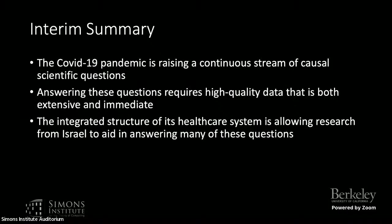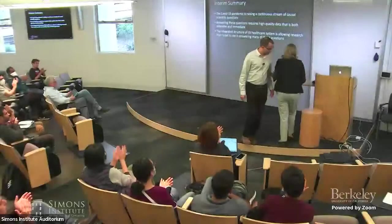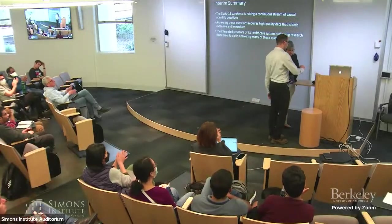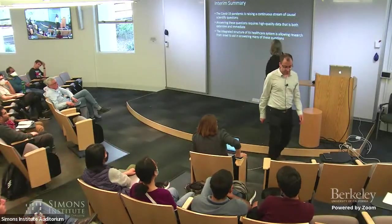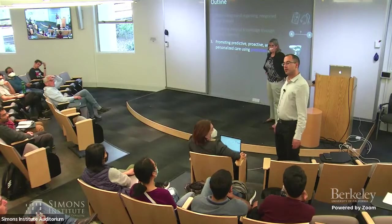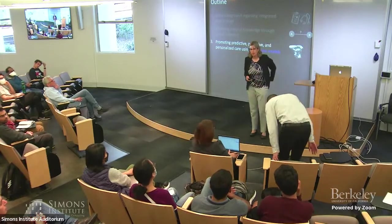Privacy is the elephant in the room when discussing the amazing interconnected data that healthcare systems have. It is a simple axiom that maintaining patient privacy is of the utmost concern. There are many layers of protection for research conducted on this kind of rich data in Israel — institutional review boards, anonymization, and so on. The interim summary is that the pandemic raised many causal questions; RCTs alone are not enough; we need high quality, extensive, and immediate data, and the integrated structure of healthcare systems enables such research.